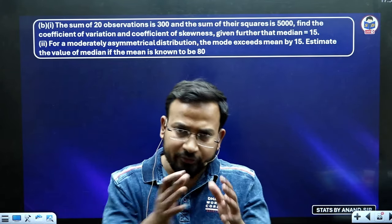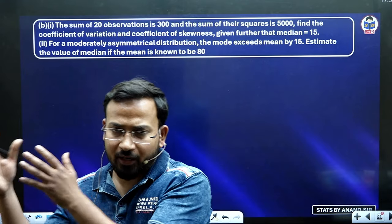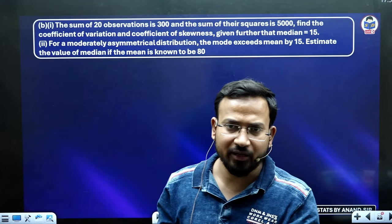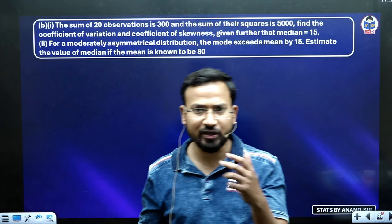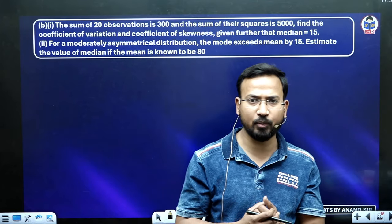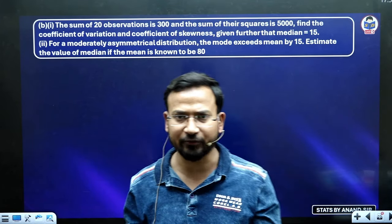The other units are: the index number is second, correlation and regression comes third, and probability comes after that.